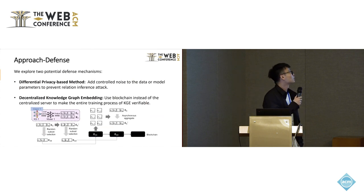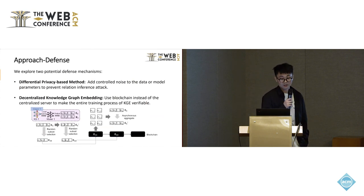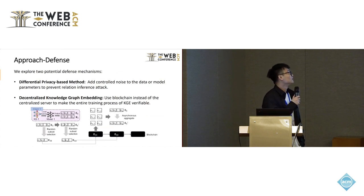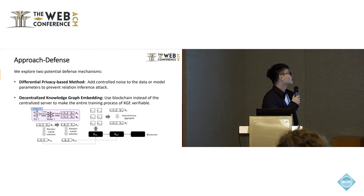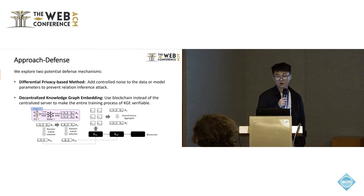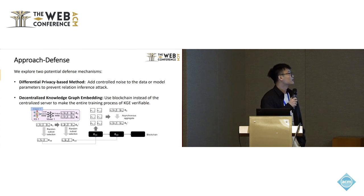We explored two potential defense mechanisms. The first is a differential privacy-based method: the victim client can add controlled noise to the data or model parameters to prevent the relation inference attack. The second is a new paradigm called decentralized knowledge graph embedding, where we use blockchain instead of the centralized server to make the entire training process of KGE verifiable. Details can be found in our paper.